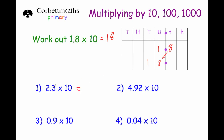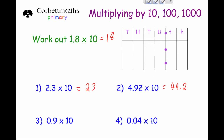When you multiply a decimal number by 10, you just move the digits one column to the left to make each digit 10 times larger. So 2.3 multiplied by 10: the 2 units become 20 and the 3 tenths become 3 units, giving the answer 23. For 4.92 times by 10: the 4 units become 40, the 9 tenths become 9 units, and the 2 hundredths become 2 tenths, giving the answer 49.2.